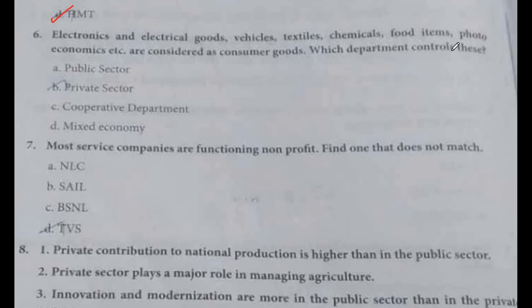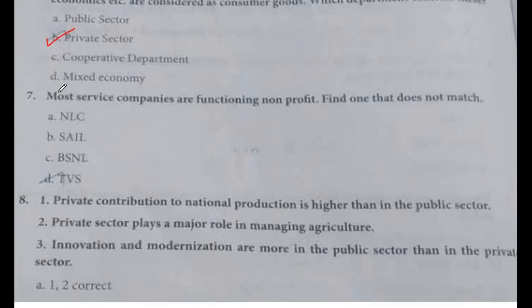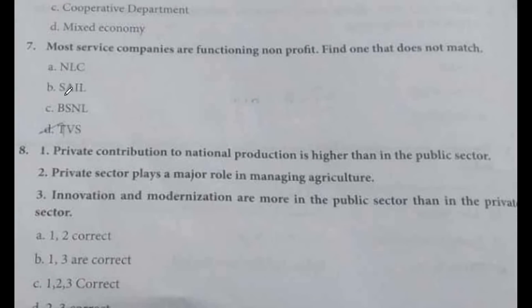Sixth question: electronics and electrical goods, vehicles, textiles, chemicals, food items, and photo economics etc. are considered as consumer goods. Which department controls these? This is the private sector. Option B.